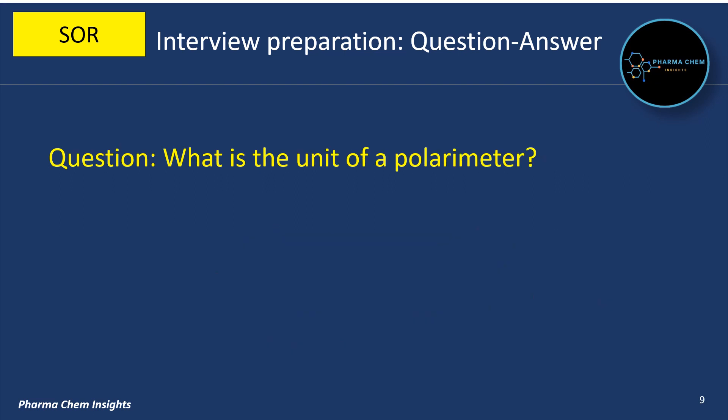What is the unit of a polarimeter? The unit of polarimeter is degree.